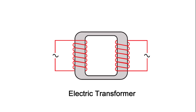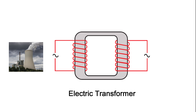To put things in perspective, this is more like the actual real-world setup. First, let's add the power plant on the primary side of the transformer, and then we're going to add the telephone poles and wires on the secondary part of the transformer that carries the electricity to your house.